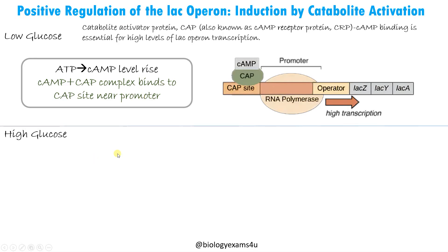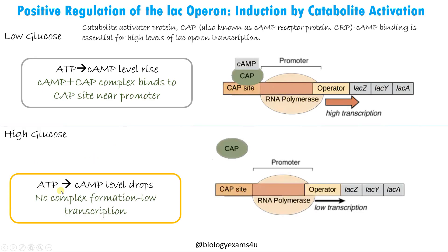Binding of the CAP-cAMP complex to the CAP site enhances transcription of the structural genes. In high glucose conditions, ATP is not converted to cAMP, so cAMP levels drop, there is no complex formation, and there is a low level of transcription of the structural genes. Remember, allolactose is essential — it ensures the operon is on by binding to the repressor protein and making it inactive. Once the operon is on, the cAMP-CAP complex boosts the rate of transcription.